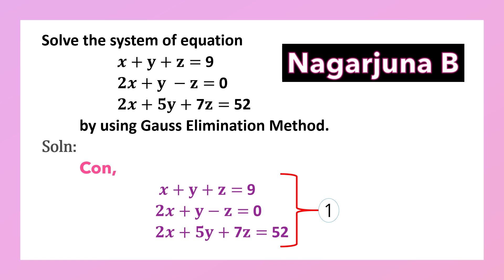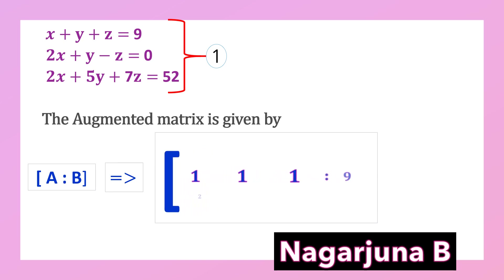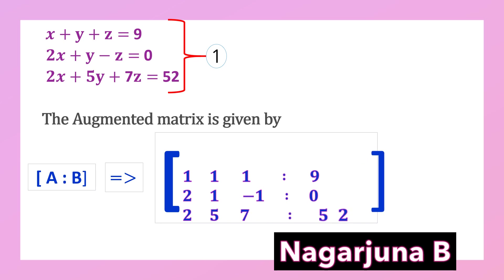The system of equations can be written in the form of an augmented matrix. The augmented matrix is given by [A | b]. The coefficient matrix A and constant matrix b give the augmented matrix: [1, 1, 1 | 9], [2, 1, -1 | 0], [2, 5, 7 | 52].